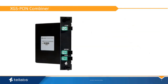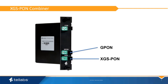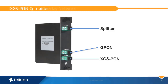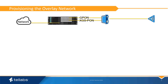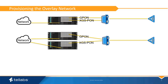The combiner mounts in a standard LGX enclosure. It has three SC-APC connections. GPON is attached to the GPON transceiver at the OLT. NGA is connected to the XGS-PON transceiver at the OLT. The common connection includes the combined XGS-PON and GPON signals, which will be connected to the splitter. The two PON ports involved in the overlay network can exist on the same OLT, separate OLTs, or even separate networks.